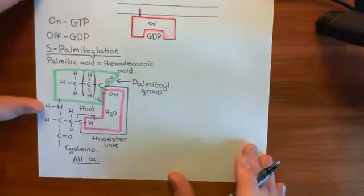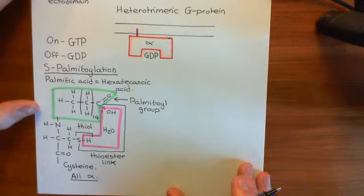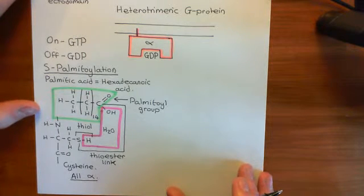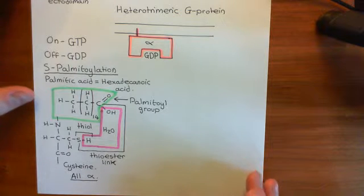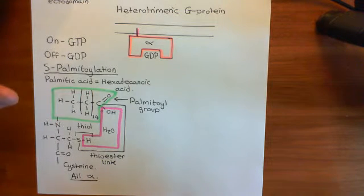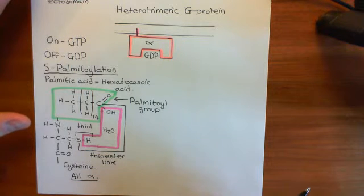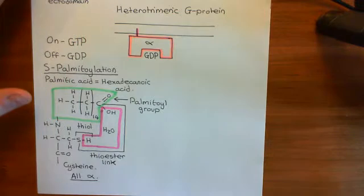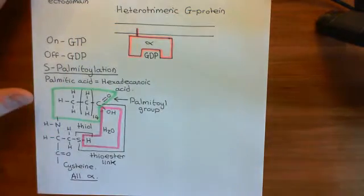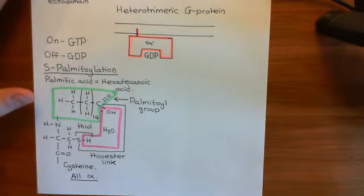Welcome back to this next video in which we are discussing the adenylyl cyclase protein kinase A pathway. We're in the process of discussing heterotrimeric G proteins. I'm describing how the alpha subunit of heterotrimeric G proteins gets lipid moieties stuck onto the side of it, which anchor themselves into the inner leaflet of the phospholipid bilayer and hold the alpha subunit attached to the underside of the cell membrane.